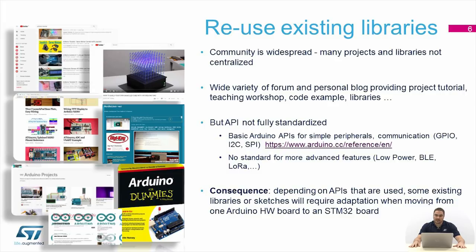We have APIs for basic peripherals like GPIO, I2C, and SPI that are standardized. But some complex protocols like Bluetooth Low Energy or LoRa are not standardized. For this reason, sometimes we need to make some adaptations for these libraries when we switch from a classical Arduino platform to an STM32 platform.